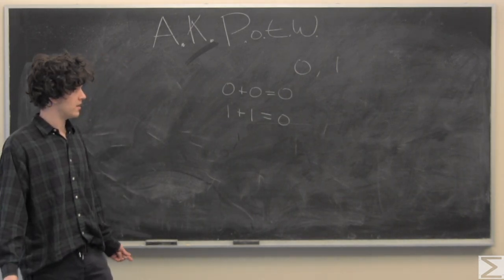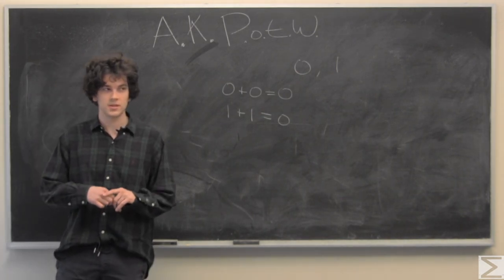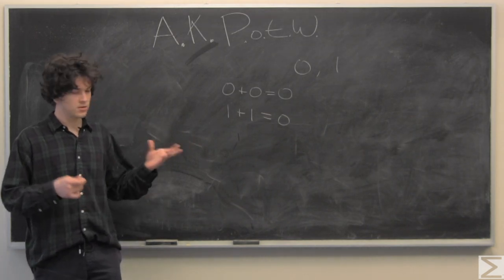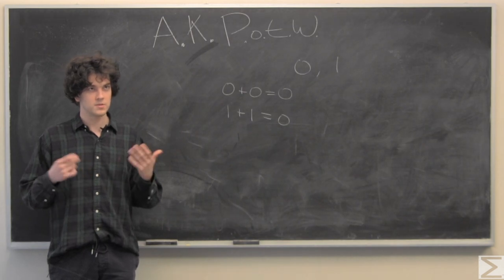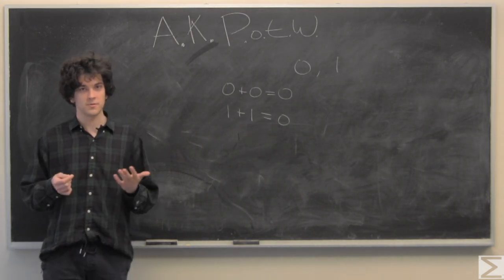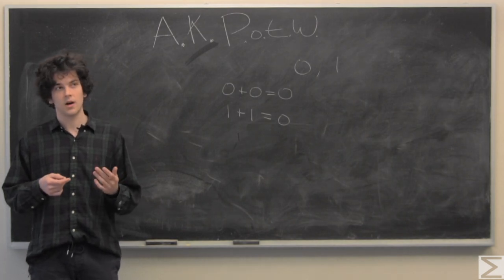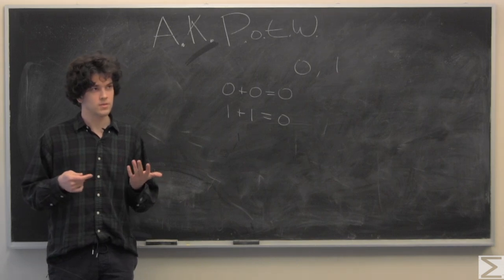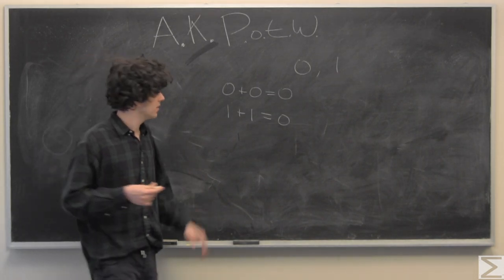We're just going to do additive identity, which is just something that when you add to itself, it returns itself. In the reals, which are a field, 0 is the additive identity. So we're just going to say, we'll just choose 0 again.